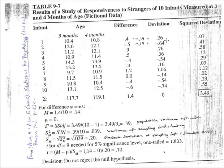To adjust for the fact that deviations sum to zero, we square all of the deviation scores. So 0.26 squared gives us approximately 0.07, negative 0.64 squared gives us about 0.41, and 0.76 squared gives us about 0.58. We calculate all of these squared deviations and sum them up, giving us the sum of squared deviations — more commonly known as sums of squares, SS.